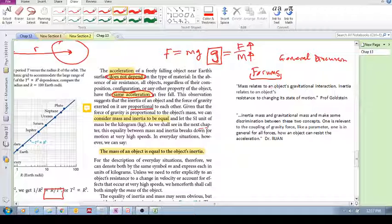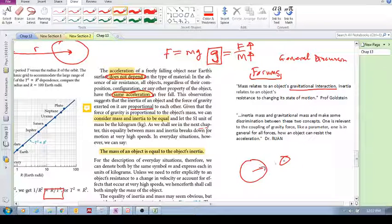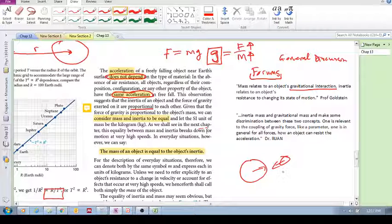Prof Goldstein said, mass relates to an object's gravitational interaction. So, two objects that are interacting gravitationally, then we talk about mass.